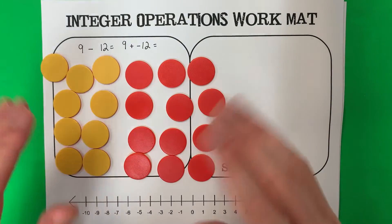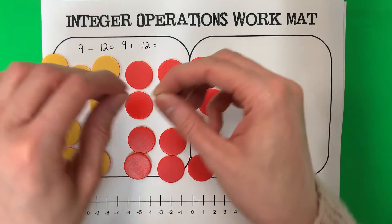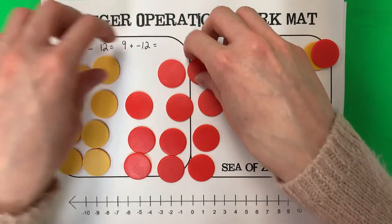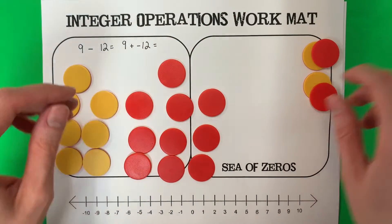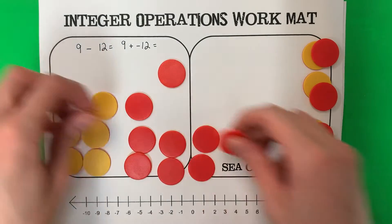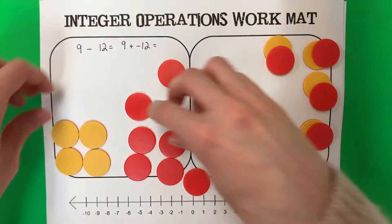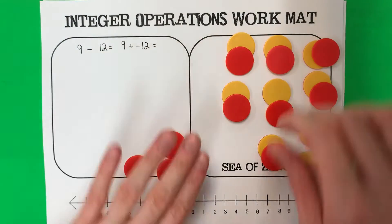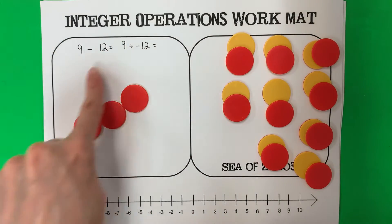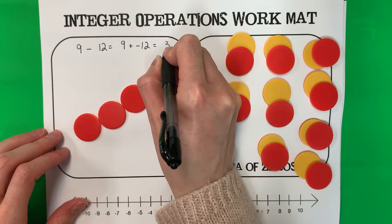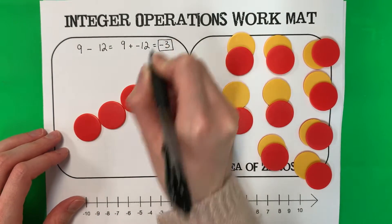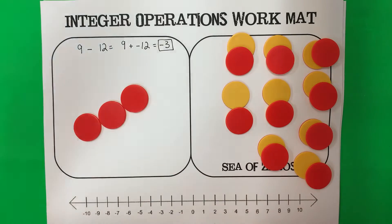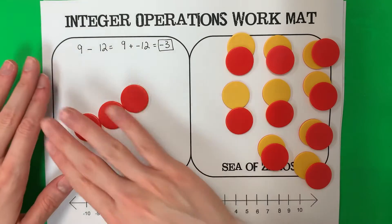Now I have one of each color — yellows and reds — so I'm going to do the zero pairs. One yellow, one red, that's a pair. We take our pairs and put them outside until we have no more pairs. What's left? I still have three reds. Three reds is negative, so my answer is negative 3. This is just like the adding rules, except you have to do keep, change, change first.